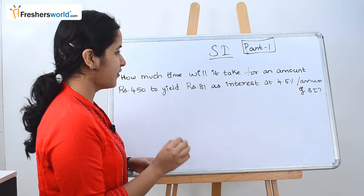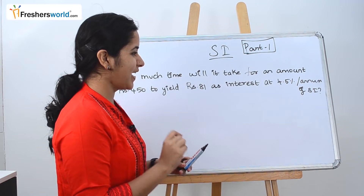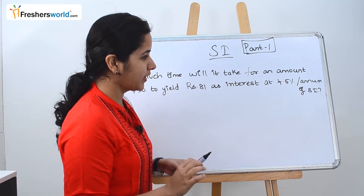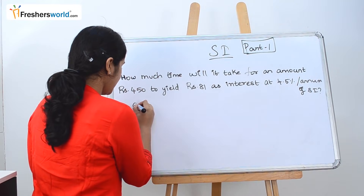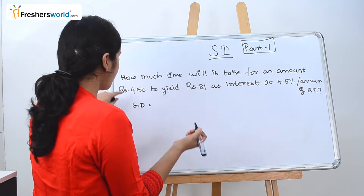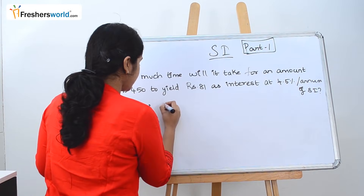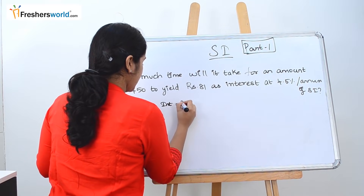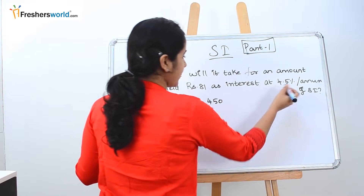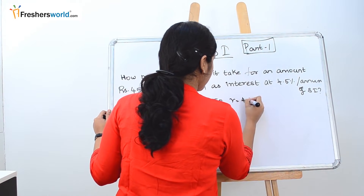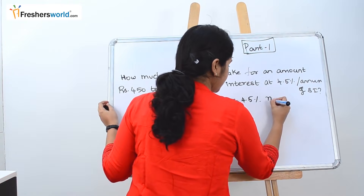Let's solve a couple of simple sums to understand this concept better. The first question is: how much time will it take for an amount of 450 rupees to yield 81 rupees as interest at 4.5% per annum simple interest? First, let's write the given data. Interest is 81, principal amount is 450, and rate is 4.5%.